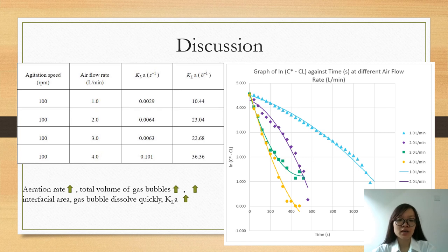However, the KLA values at 3 litre per minute is slightly lower than 2 litre per minute which is supposed to be higher. This may be because of some experimental errors that occur during the experiment.